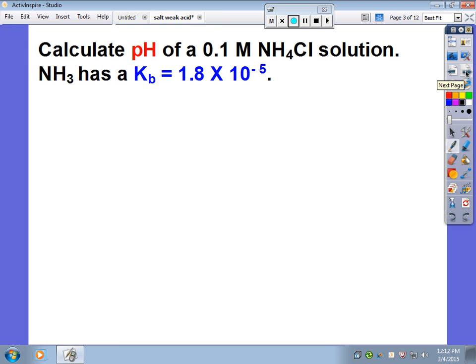Now, that's the shortcut method. Let's go ahead and look at how to do a problem. This problem wants me to find the pH of a 0.1 molar ammonium chloride solution. That's a salt, isn't it?